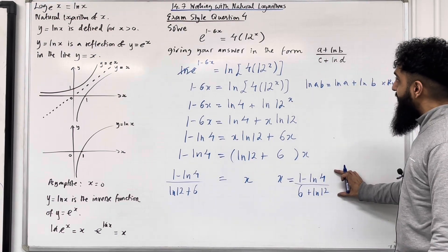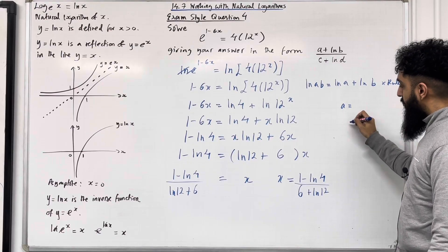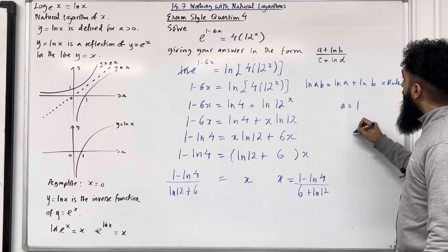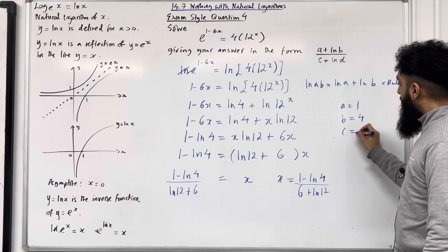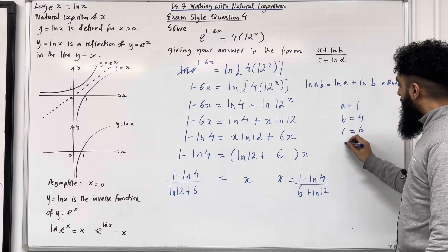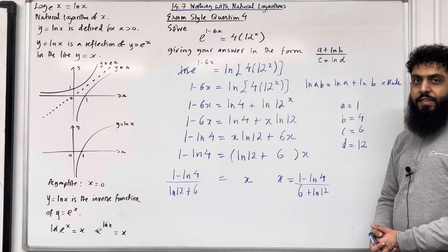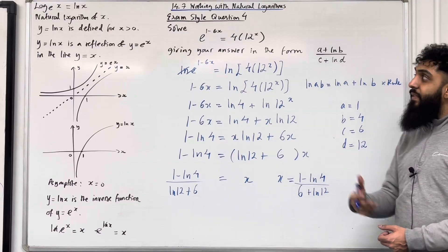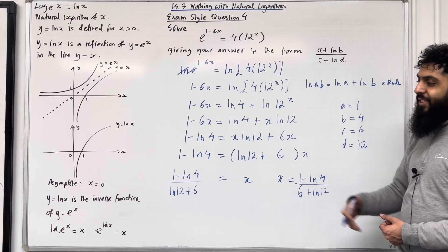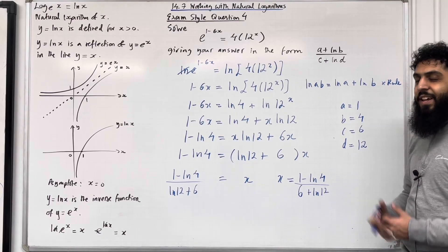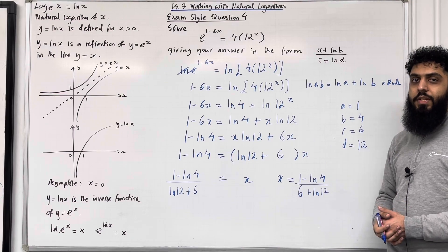That is the desired form, with a = 1, b = 4, c = 6, and d = 12. This completes exam style question 4 and teaching video 14.7 working with natural logarithms. If you found this video useful, please subscribe, leave a like, leave a comment, and turn on your notification bell to receive notifications every time I post a new teaching video.